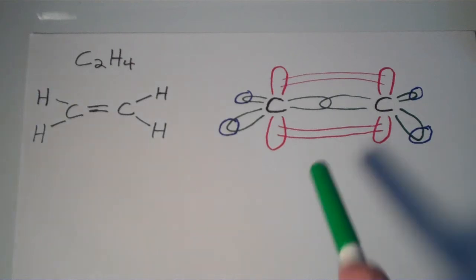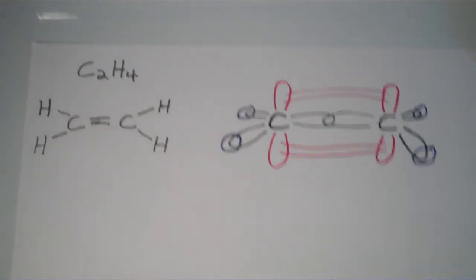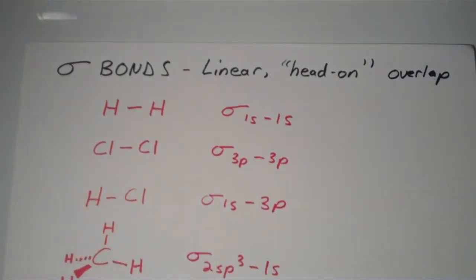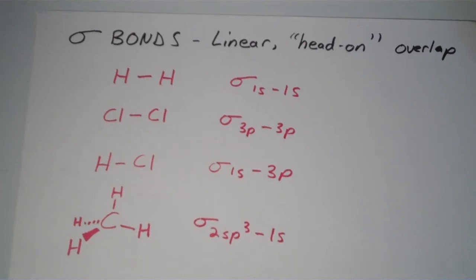And the direct overlap, that's what we call a sigma bond. So sigma bonds are a direct head-on overlap of orbitals. So all of the orbital overlaps that we've seen, all the chemical bonds that we've seen so far with valence bond theory, have all been sigma bonds. Any single covalent bond consists of a sigma bond, a linear head-on overlap of orbitals.